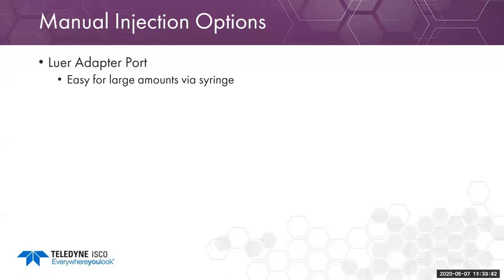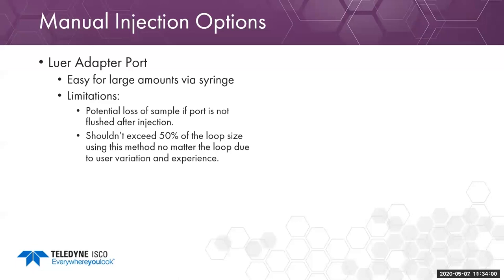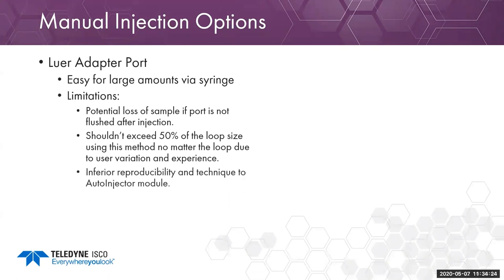For manual injection, the luer port adapter is easy for large amounts via syringe, but has limitations: potential sample loss if you don't flush after injection, and you shouldn't exceed 50% of the loop size due to user variation and experience. As you inject, you create a laminar flow profile — sample starts to exit the back of the loop. You don't want to exceed 50% of the loop size using the luer port adapter.